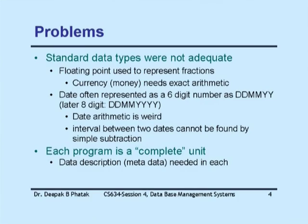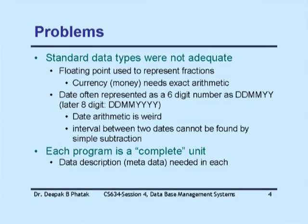Standard data types were not adequate. In conventional programming languages you have integer and floating point. How do you handle money transactions requiring exact arithmetic — like 3 rupees 33 paise? You'd have to represent this as a floating point variable, but internal floating point representation is binary. There is no exact equivalent in the decimal number system for some binary values. Most programming languages did not permit decimal representation of numbers. COBOL was one programming language which permitted them.